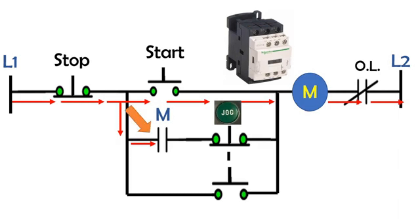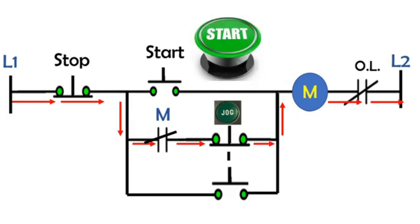When you release the start button, the current flow will divert from line one through the stop post button, through normally close auxiliary contact, through normally close jog contact, through the magnetic coil overload relay, then back to line two.